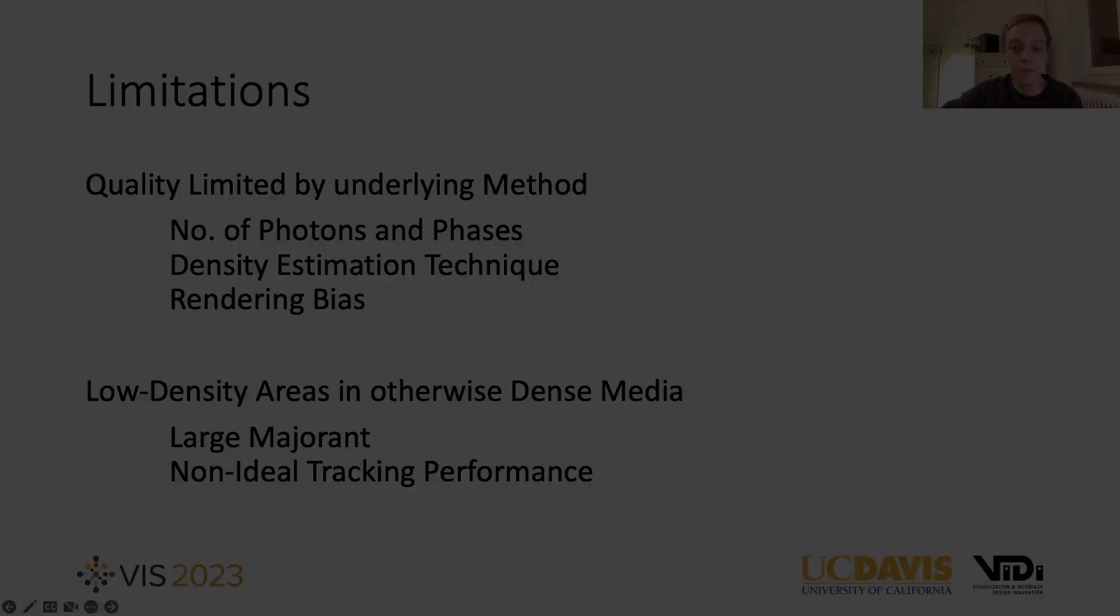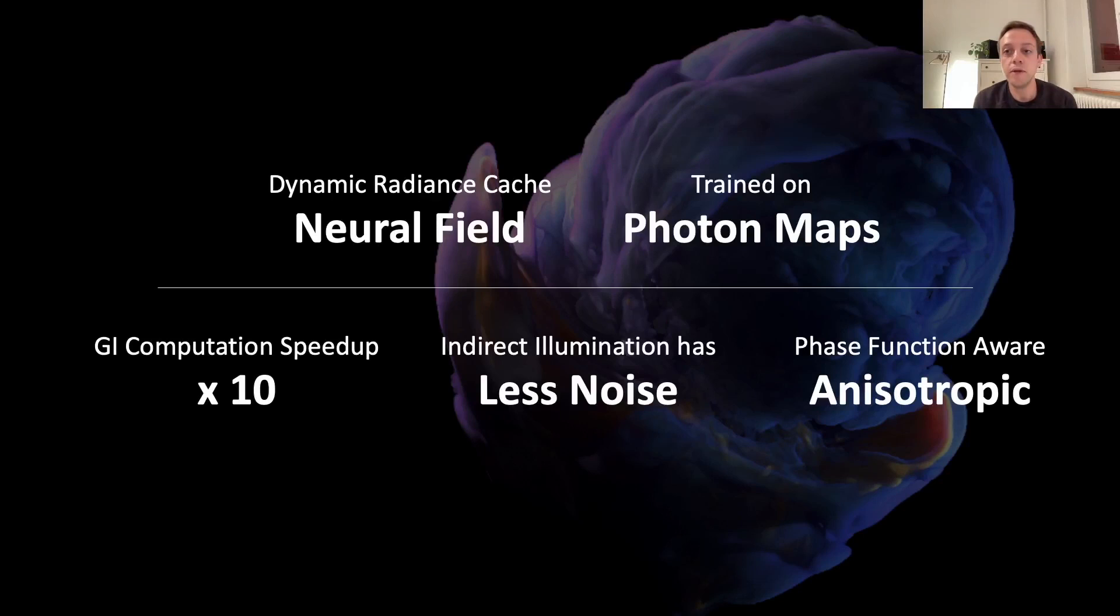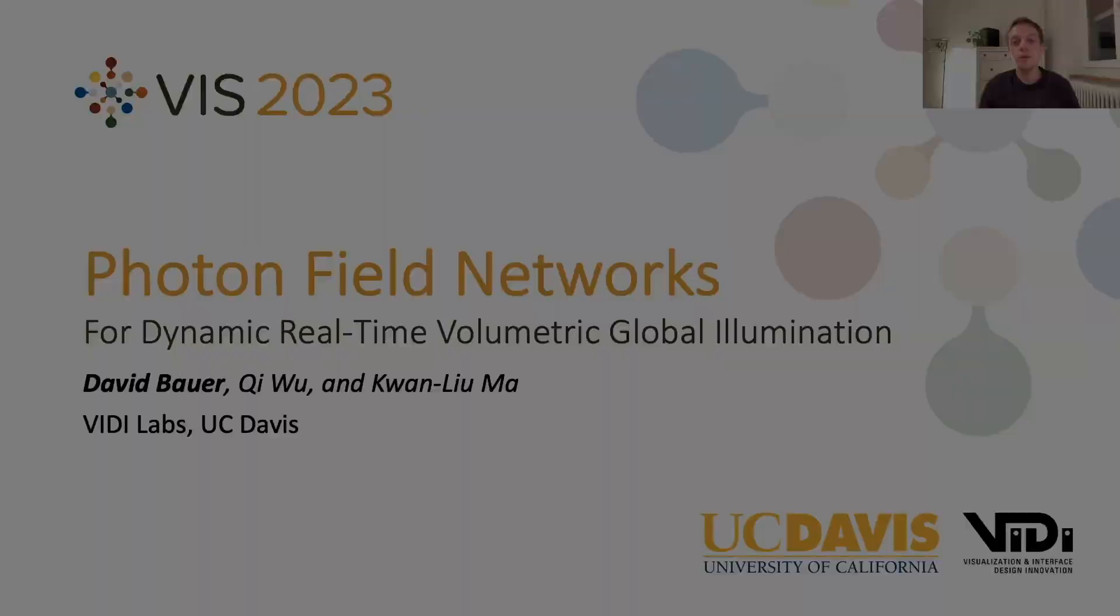To summarize, we introduce a radiance cache modeled as a neural field, which we title photon field. A photon field is trained on photon maps, traced at varying phase function scattering settings, and using the trained photon fields we can produce global illumination effects on average 10 times faster than a baseline path tracer. The representations produce less stochastic noise and can model non-isotropic scattering behavior in real time. And with this, I want to thank you for listening, and I hope to see you at VIS.